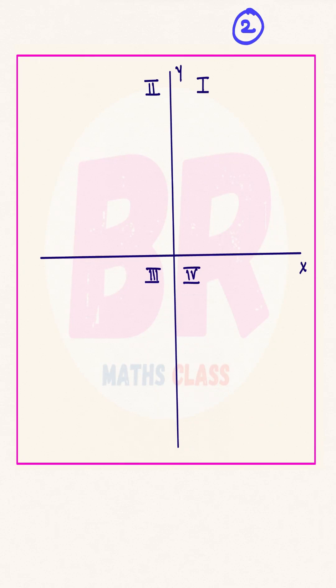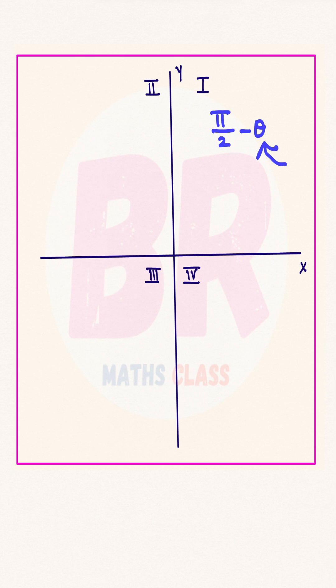This is the second video on trigonometry formulas. We often get these questions very frequently while using trigonometry formulas: pi by 2 minus theta lies in which quadrant? Here, in all these formulas, theta represents an acute angle.